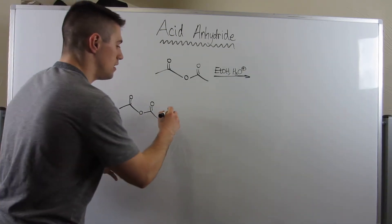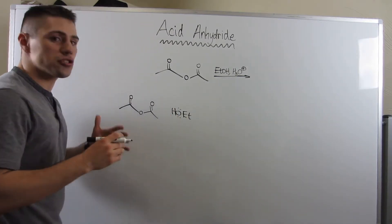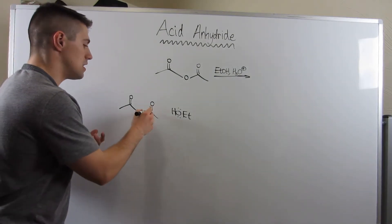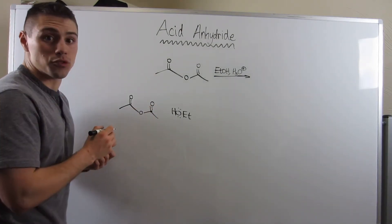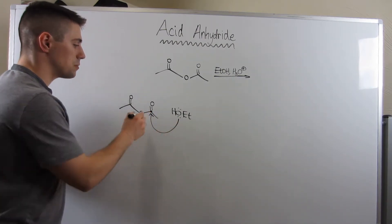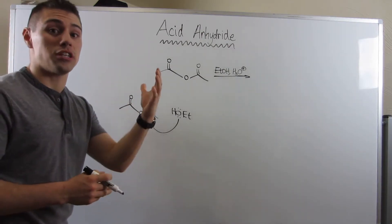So we don't need a protonation step because acid anhydrides are very reactive, more reactive than carboxylic acids. Okay. So we can just go ahead and draw the nucleophile we're working with, aka ethanol, and we could just go in and attack right away. Oxygen on the ethanol comes in, attacks the carbonyl, electrons swing up forming our tetrahedral intermediate.